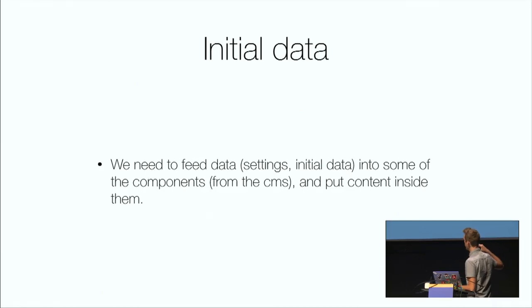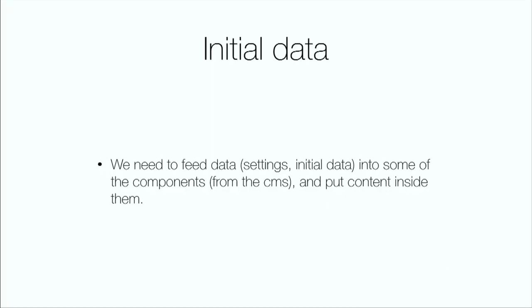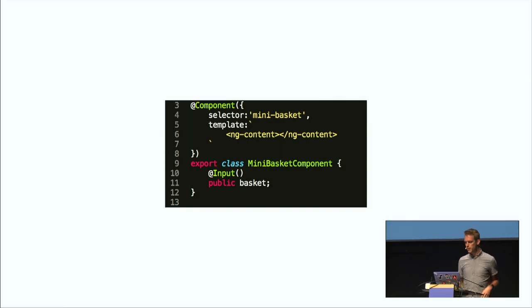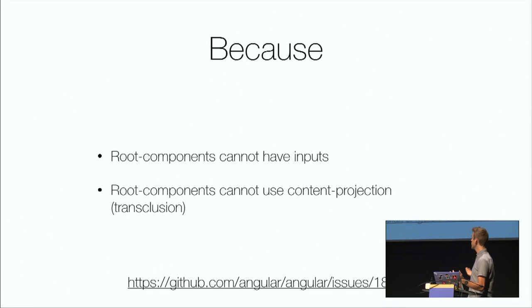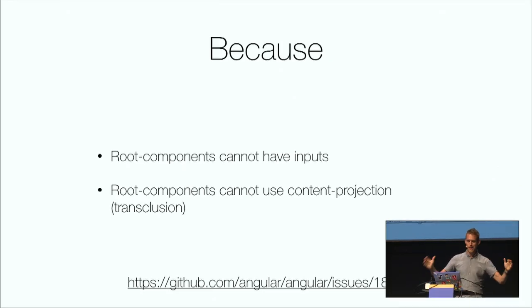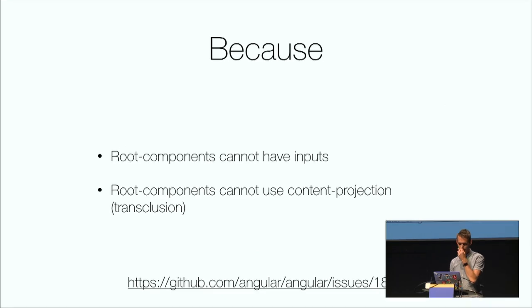Another problem is feeding initial data — like maybe the images for the gallery or the products for the basket should come from the server. We could do something like an input with basket items, or use transclusion and ng-content in the template. But it turns out root components don't have inputs and don't support content projection. There's a GitHub issue with a lot of back-and-forth about whether this should be possible, but that's the state of it today.